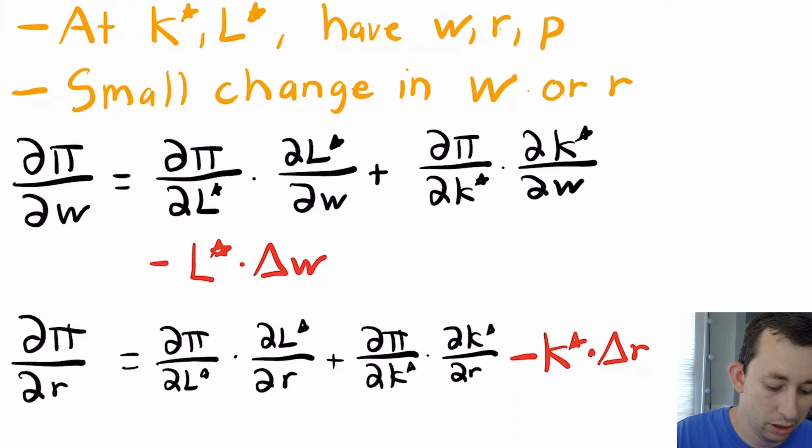Let's walk through this. You're at K* and L*, you have your parameters—wage, rental rate, and price—and you have a small marginal change in W or R.